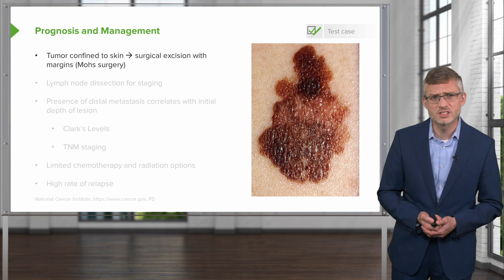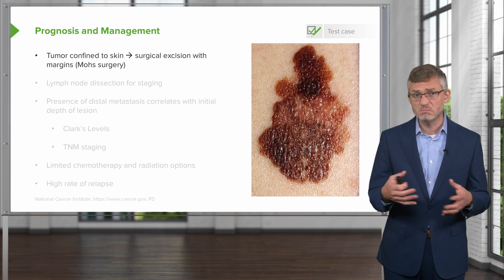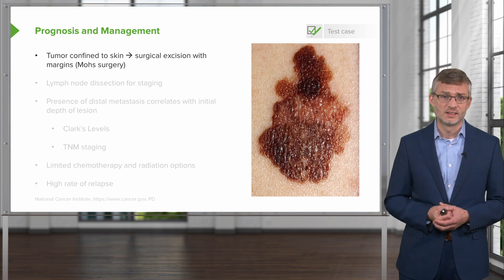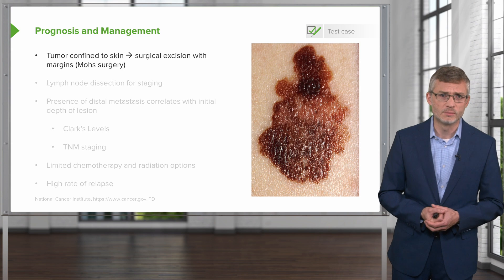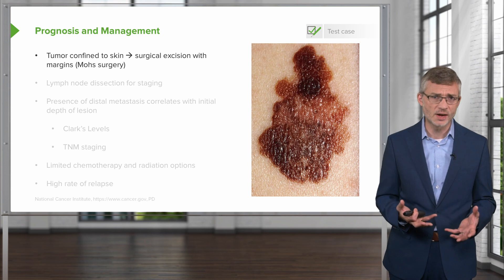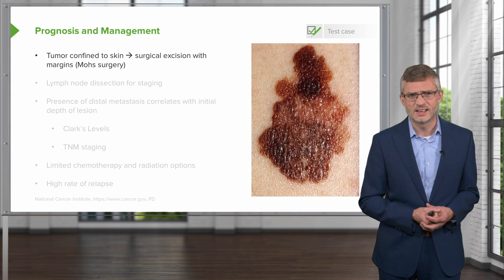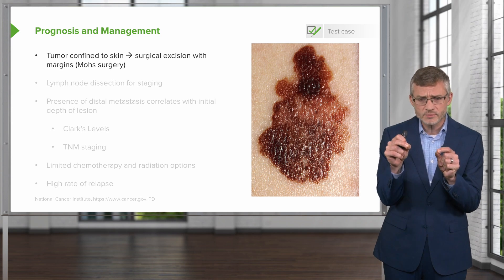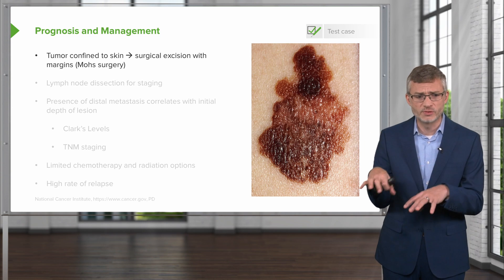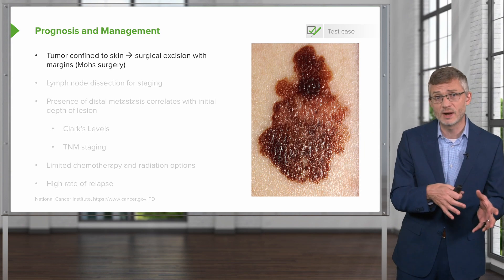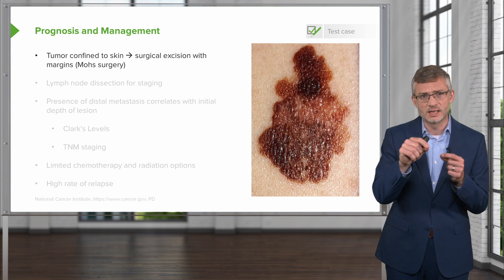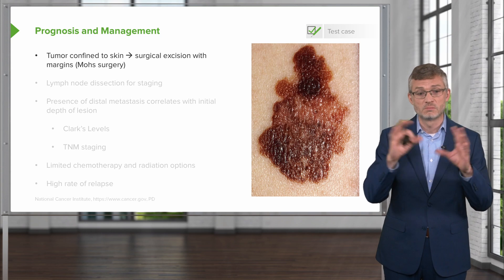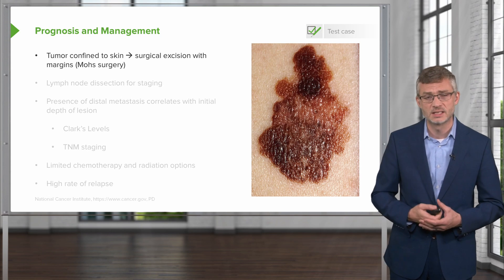In terms of prognosis and management, a tumor confined to the skin is managed with surgical excision, looking for clean margins. This approach is called Mohs surgery, named after Frederick Mohs in the 1930s. The surgeon excises a very small sliver of skin, sends it to the lab, and it's reviewed under microscopy while the patient is waiting. You continue to take off little slivers of skin until you have clear, clean margins — then you can close the case.